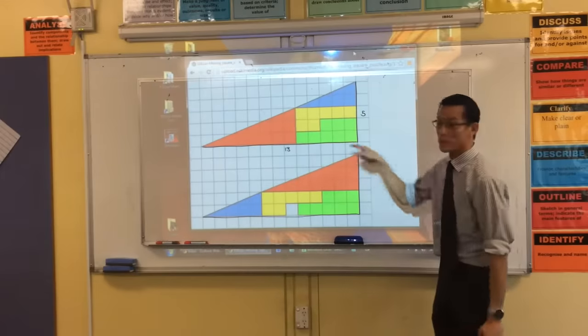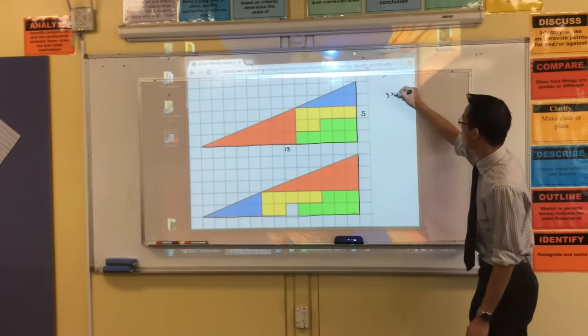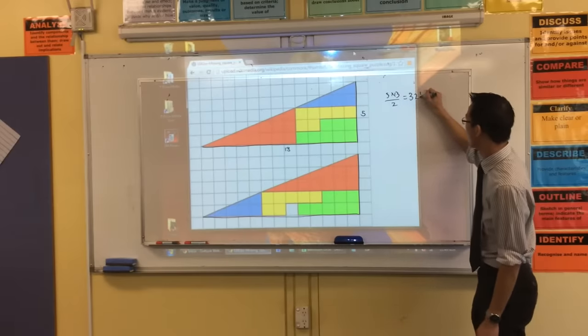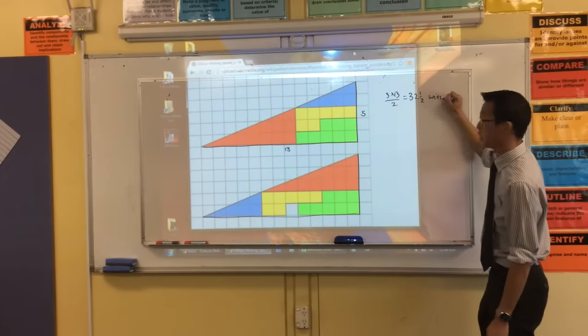So the area of this triangle here is, well, it's going to be 5 by 13 on 2, right? Which I think is 32 and a half units. Yes? Okay.